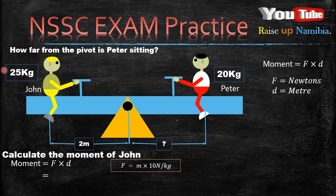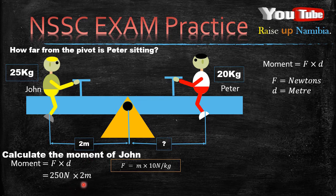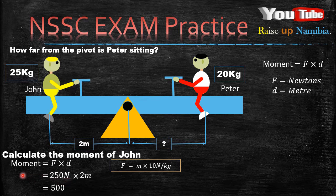We calculate his force using: force equals mass multiplied by the gravitational field strength, which is 10 Newtons per kilogram. So 25 kg × 10 N/kg gives us 250 Newtons. We then multiply 250 Newtons by the distance from the pivot, which is 2 meters. 250 × 2 gives us 500 Nm — Newton meters.